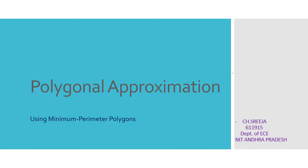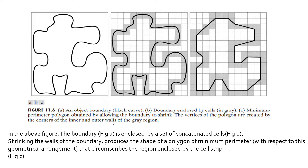Hello everyone, this is Reija and today we are going to discuss about polygonal approximation using minimum parameter polygons. The main objective of this topic is to generate a method using which we can represent a boundary with a polygon which can retain the essence of the shape of the original boundary. One of the most effective ways in which we can represent a boundary with a polygon is by using minimum parameter polygons.